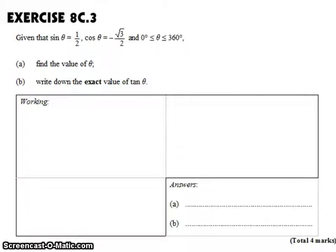In this question, we're given some information about an angle. We're told that its vertical component is 1/2, and its horizontal component is negative √3/2. We're also told that it's somewhere in the first rotation between 0 and 360 degrees, and we're told to find the value of θ.